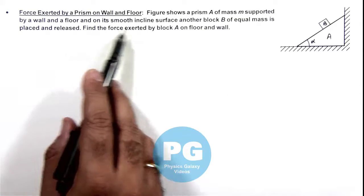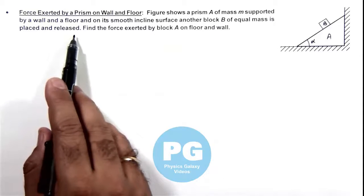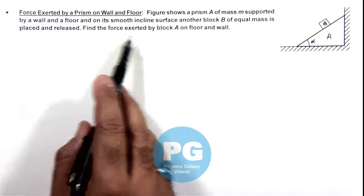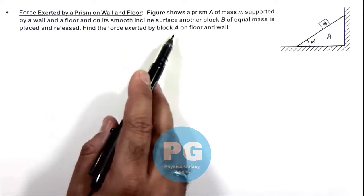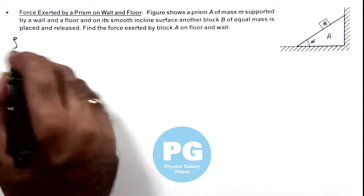And on its smooth inclined surface another block B of equal mass is placed and released. We are required to find the force exerted by block A on floor as well as on wall. Now to analyze this situation.